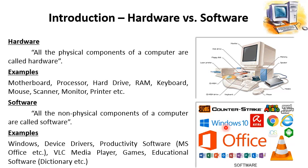Games are also software. Operating system is also software. Antiviruses, internet browsers like Google Chrome and Internet Explorer, Microsoft Office which comprises many application software, and VLC Media Player — all these are different examples of software. All software components are non-tangible and are the non-physical components of a computer.